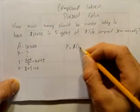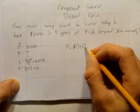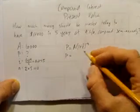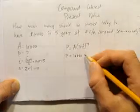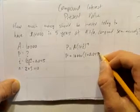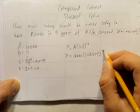Let's write our equation. P equals A(1 plus i) to the negative n. So our present value, our starting value, will be 10,000 times (1 plus 0.045) to the power of negative 10.